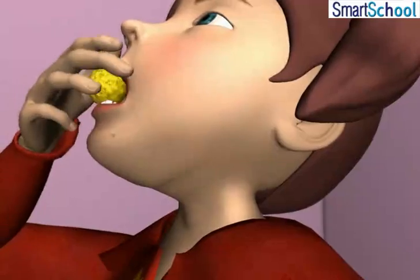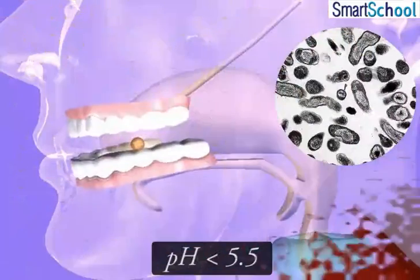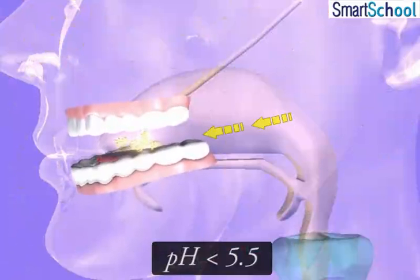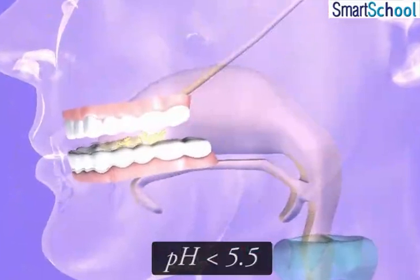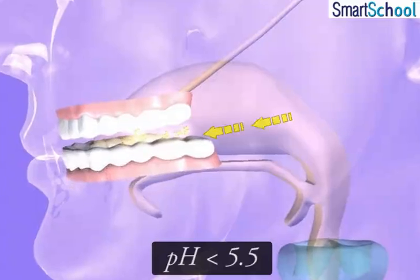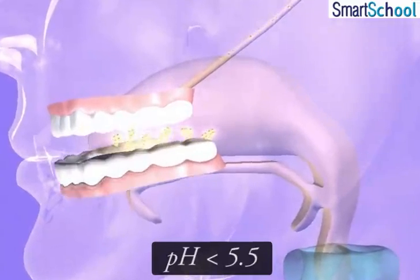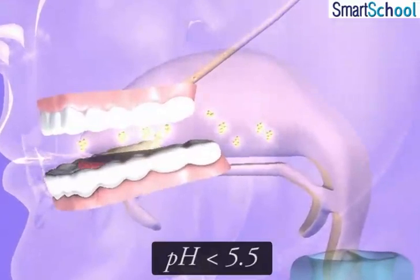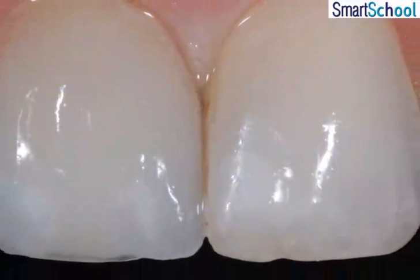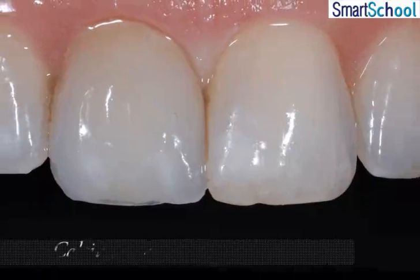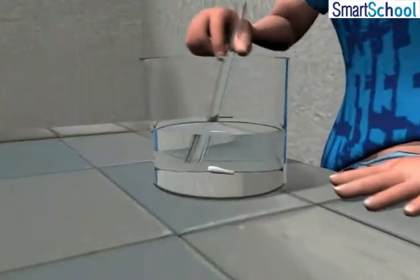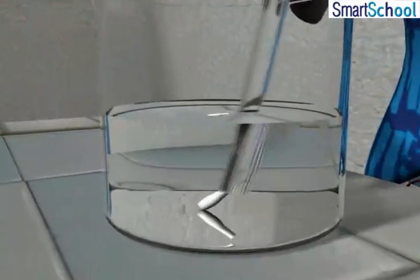After eating, the bacteria present in the mouth start producing acid due to the degradation of sugar and food particles left over in the mouth. This reduces the pH of the mouth below 5.5, and the tooth enamel, which is made up of calcium phosphate i.e. Ca₃(PO₄)₂, which is the hardest substance in the body, starts decaying.